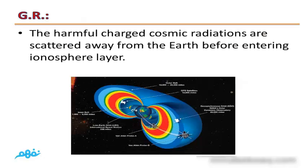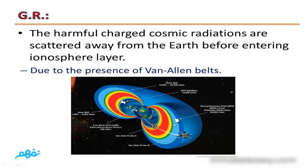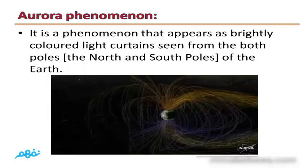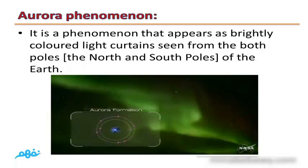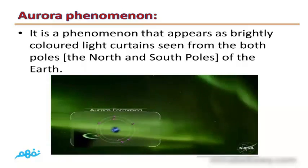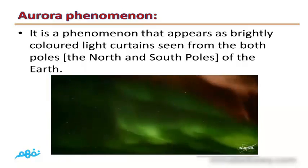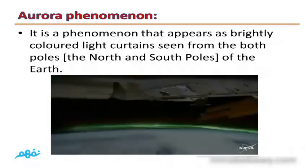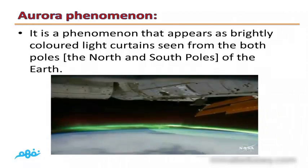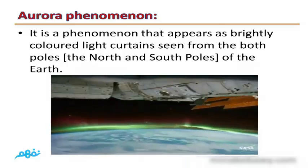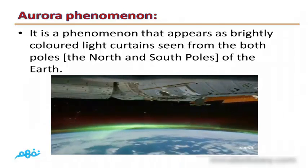Harmful charged cosmic radiations are scattered away from the Earth before entering the Ionosphere, due to the presence of the Van Allen belts. The Aurora phenomenon appears as brightly colored light curtains seen from the north and south poles of the Earth, representing the aurora.